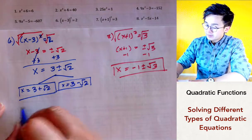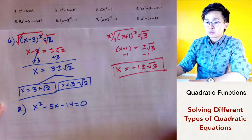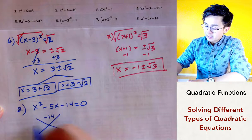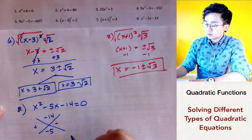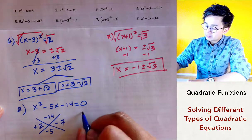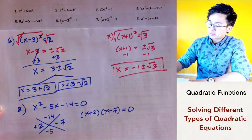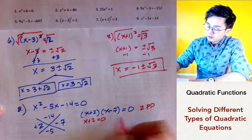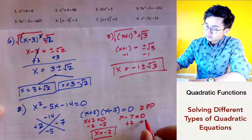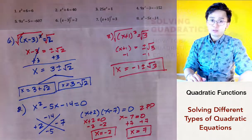For the last problem, number eight, we have a factorable quadratic equation. To find the solution set, we factor. The factors of negative 14 that give us a middle coefficient of negative 5 are negative 7 and positive 2, so we get x plus 2 times x minus 7. Using the zero product property, we set x plus 2 equal to 0 and x minus 7 equal to 0, giving us x equal to negative 2 and x equal to positive 7. This is how we solve for the solutions of a quadratic equation. Thank you.